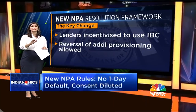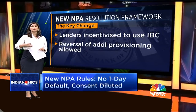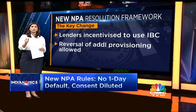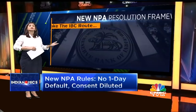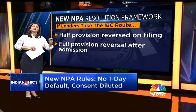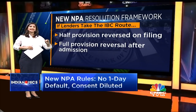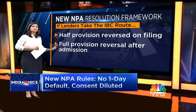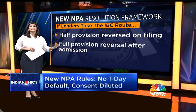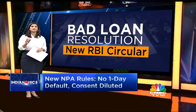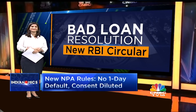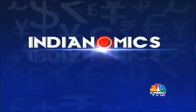To incentivize bankers without violating the Supreme Court order, the new circular says that if you choose to go the IBC route, half of the additional provisioning can be reversed at the time of filing the application with the NCLT, and the full additional provisioning can be reversed at the time of admission of a case in the courts. In substance, this is a diluted version that retains the essence of the earlier circular — time-bound resolutions.